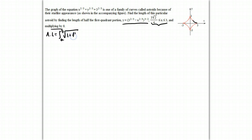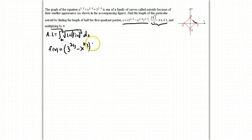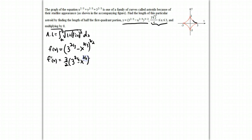Our function is (3^(2/3) - x^(2/3))^(3/2), so our derivative is 3/2 times that same thing raised to the 1/2 by the chain rule, multiplied by the derivative of the inside, which is negative two-thirds x^(-1/3).